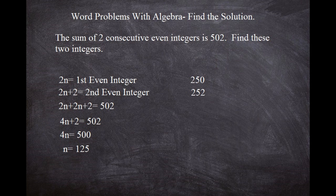Now let's say it had said the sum of 19 consecutive integers is 502. All we would have had to do is set 2n again as that first even integer, 2n+2 as the second even integer, 2n+4 as the third even integer, 2n+6 as the fifth even integer. You see what I'm saying?